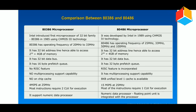The 80386 delivers 4 MIPS at 25MHz, and most instructions require 2 clock cycles for execution. The 80486 delivers 15 MIPS at 25MHz, and most instructions require only 1 clock cycle for execution.